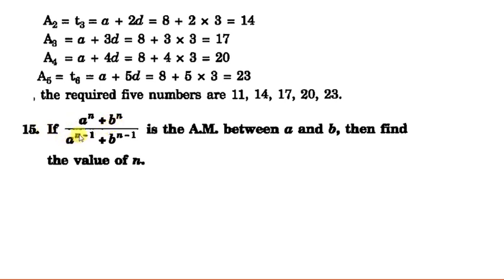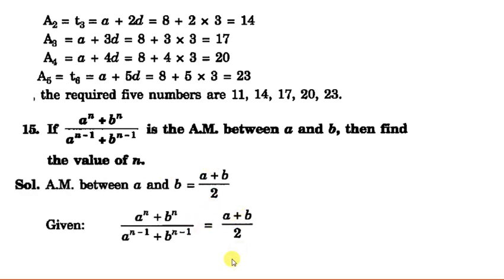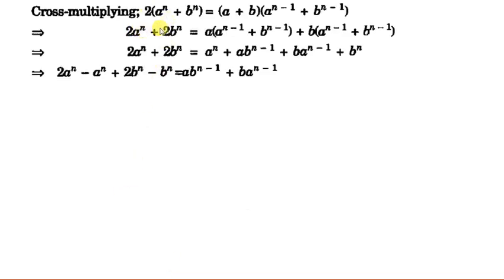Next question: If (a^n + b^n) upon (a^(n-1) + b^(n-1)) is the arithmetic mean between a and b, find the value of n. This expression is the arithmetic mean of a and b, so we can write it equal to (a plus b) divided by 2. Cross-multiplying gives: 2a^n plus 2b^n equals a times (a^(n-1) + b^(n-1)) plus b times (a^(n-1) + b^(n-1)).